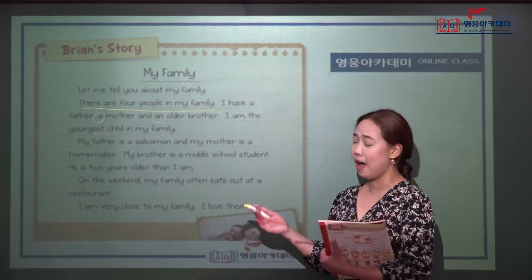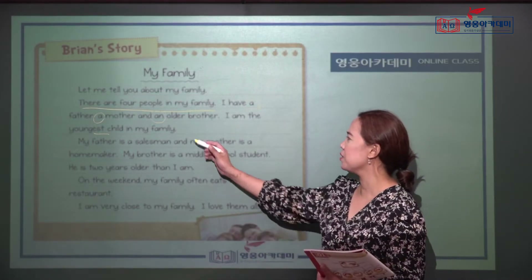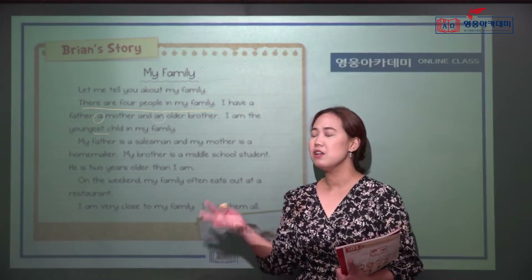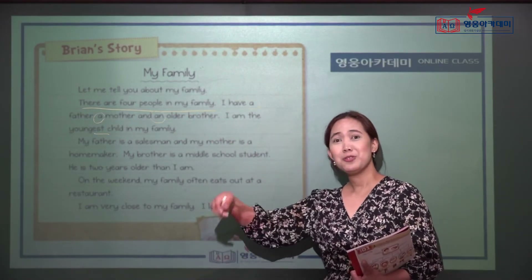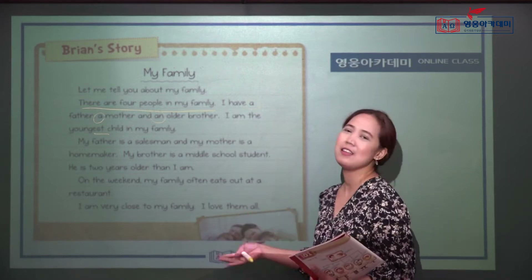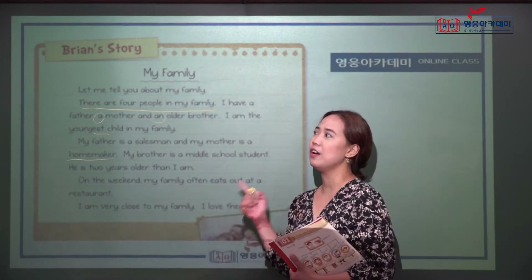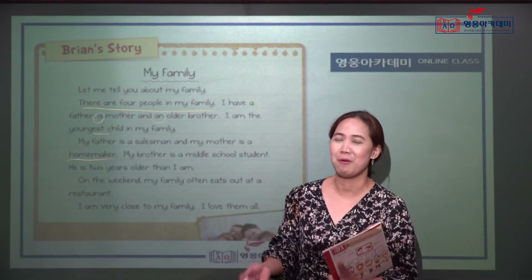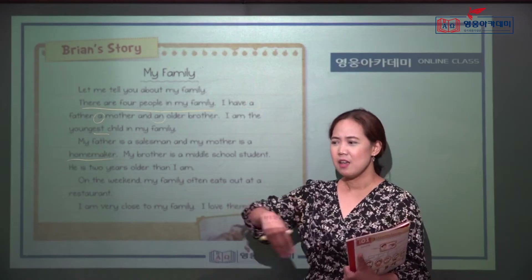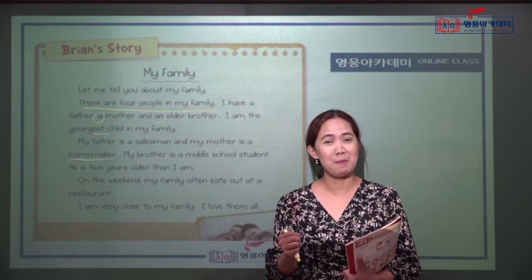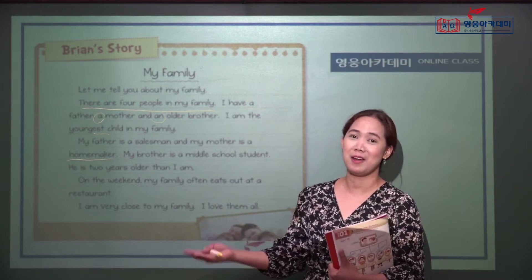My father is a salesman. A salesman is a person whose job is to sell things. My mother is a homemaker. A homemaker is the same as a housewife — we say homemaker because the mom is practically the manager of the house, managing everything. So we can say 'a homemaker' or 'a housewife.'